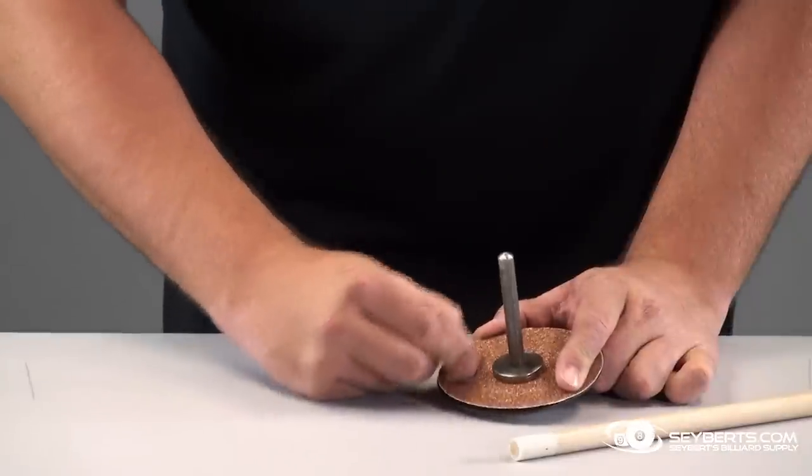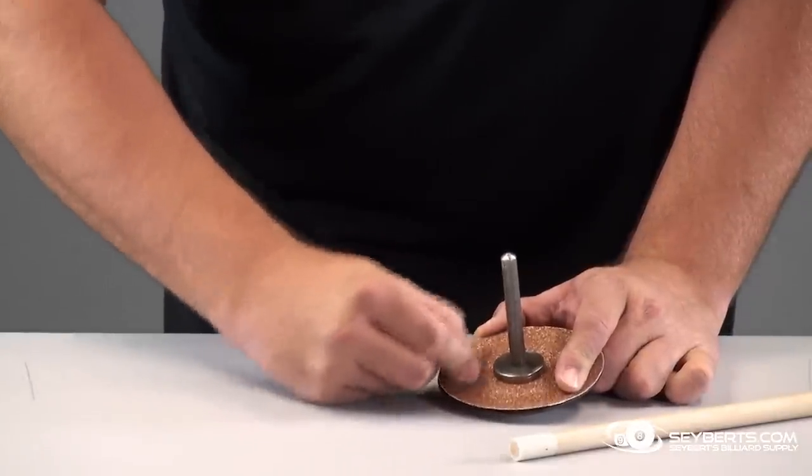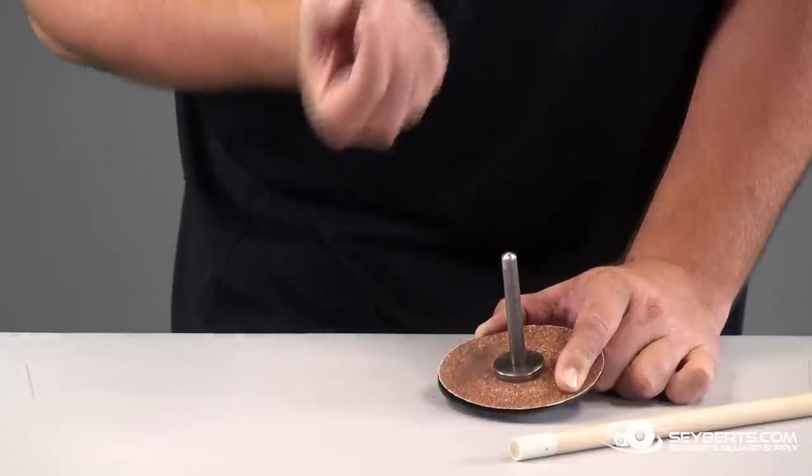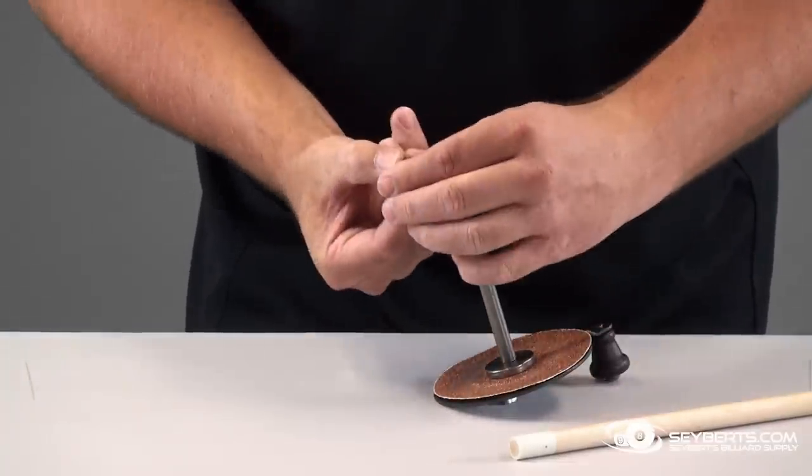Then you want to prepare your tip. What we do is just use the cue top sander bottom, rub it back and forth - it roughs up the surface and gives a little better adhesion for the glue.